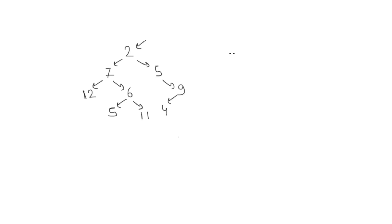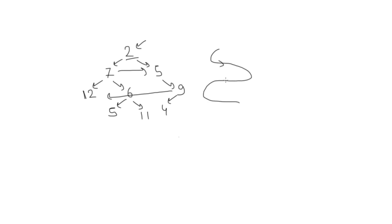Hey guys, welcome to Coding Simplified. We'll see a new problem in binary tree — we are given a binary tree and we need to print elements in spiral form. Spiral form means first I will print this one, then I will print this way, then I will print this way — so there is basically a spiral going on.